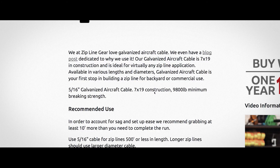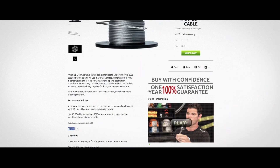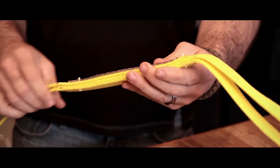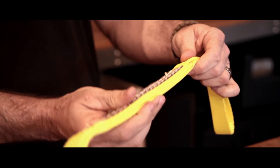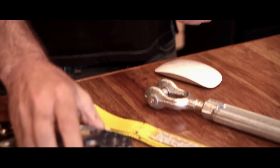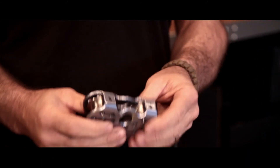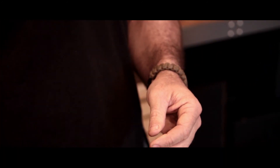A couple of examples: the cable page uses minimum braking strength, the turnbuckle page uses load limit, and this lanyard uses the term rated capacity. You'll also see KN, which is kilonewtons, and one kilonewton represents 225 pounds.